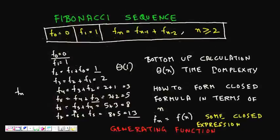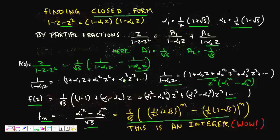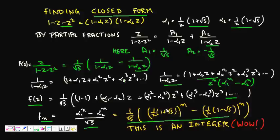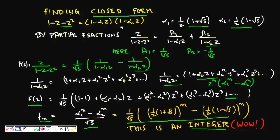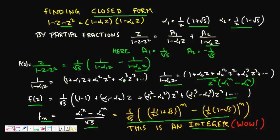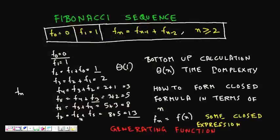This expression gives us the closed form for the n-th Fibonacci number. Even though it involves irrational numbers like √5, by the recurrence all Fibonacci numbers are natural numbers, so these terms combine to produce an integer. This closed form means instead of a Θ(n) algorithm, you can find F(n) in constant time. I hope you understand this — thanks a lot.